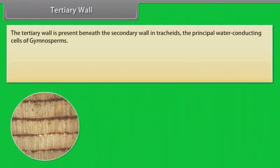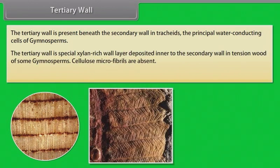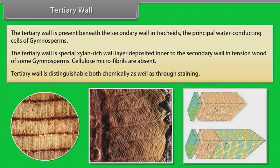Tertiary wall: The tertiary wall is present beneath the secondary wall in tracheids, the principal water-conducting cells of gymnosperms. It is a special xylan-rich wall layer deposited inner to the secondary wall in tension wood of some gymnosperms, and cellulose microfibrils are absent. The tertiary wall is distinguishable both chemically and through staining.